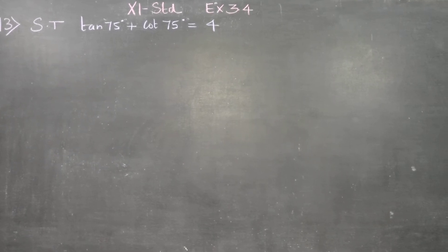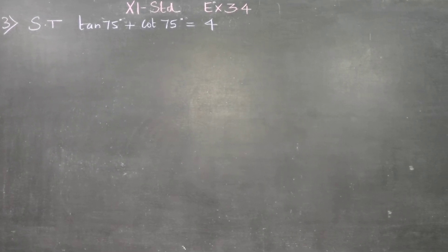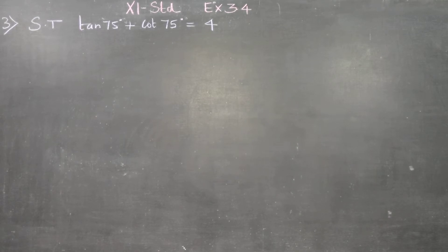Dear Levan Standard students, in exercise number 3.4, sum number 13: tan 75 plus cot 75.